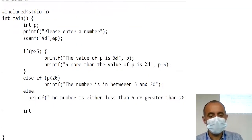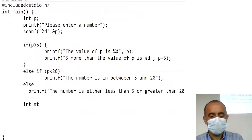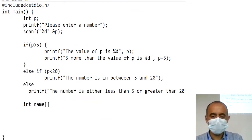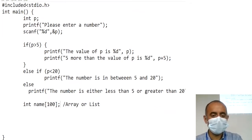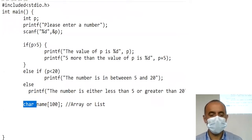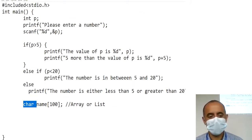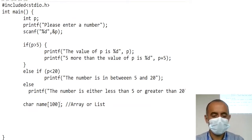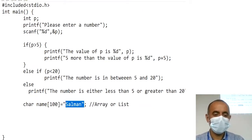For string input — how to take a string from the user — you write: char myString or for example if you want to ask the user's name, you write it like this. This creates an array which you also call a list. Every element of that array will be of type char — which stands for character. So char name[100] means you created an array named 'name' with 100 elements. If you want to initialize it you can do so; if not, that's also fine.